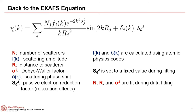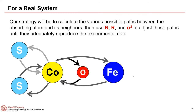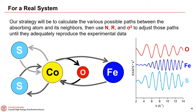Coming back to the EXAFS equation: we calculate f(k) and delta(k) — the phase and amplitude — using FEFF. Then we use the coordination number N, distance R, and sigma squared to modify those scattering paths, adjusting phase and amplitude until the sum of calculated paths matches the experimental data. For example, for a cobalt atom with sulfur ligands, an oxygen, and a nearby iron, you'd calculate cobalt-oxygen, cobalt-sulfur, and cobalt-iron scattering paths and vary N, R, and sigma squared for each to match the data — which is exactly what you'll do in the tutorial.